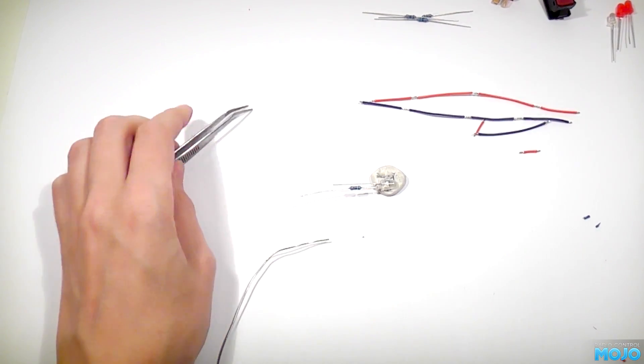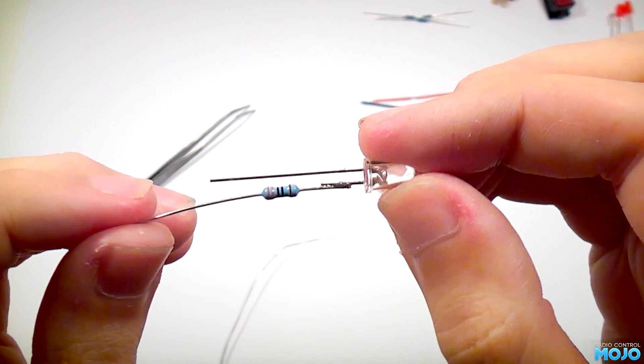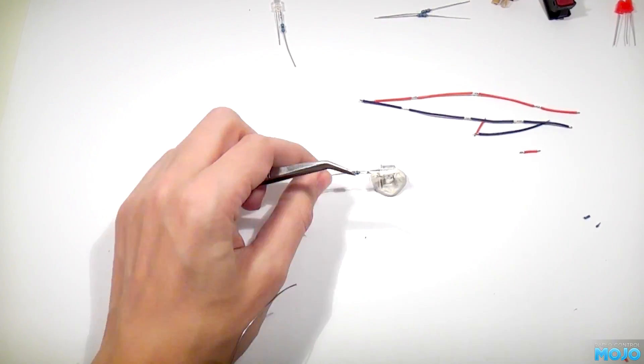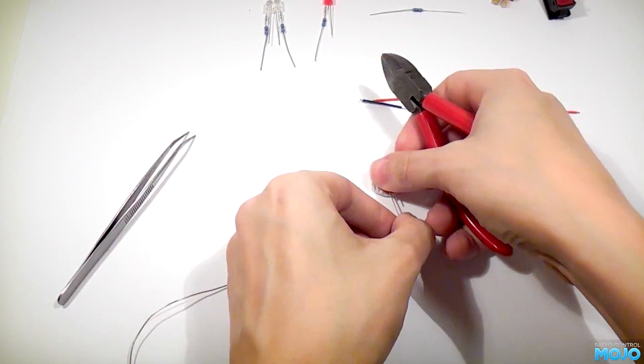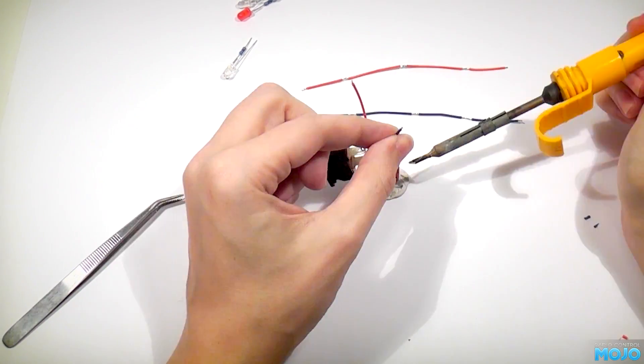Then, with some fresh solder on the iron, heat the two parts at the same time. You should be left with a nice glossy joint. The other joints all done the same way. Don't hold the iron on too long after the solder melts, or the solder won't flow properly, and you'll be left with a bad joint.